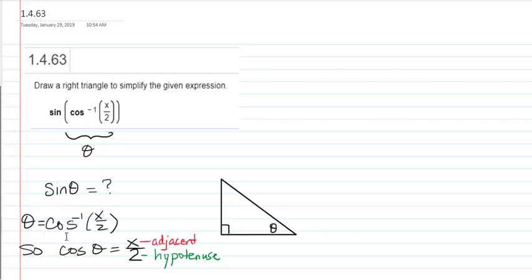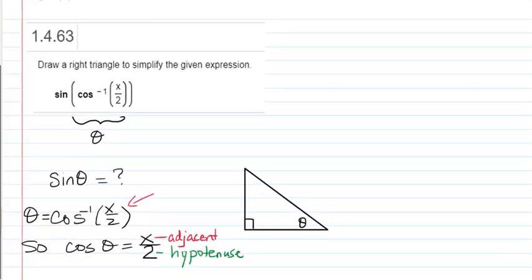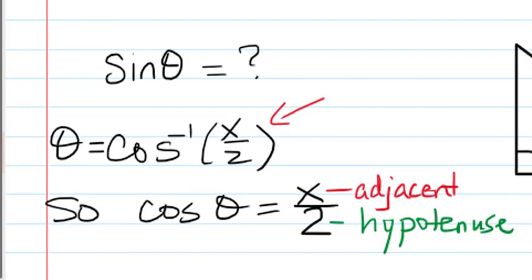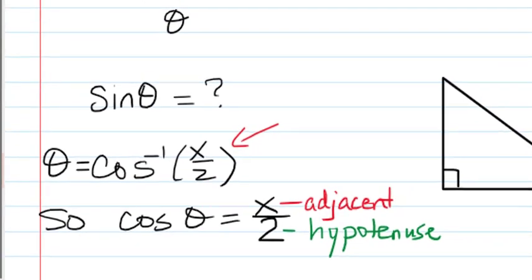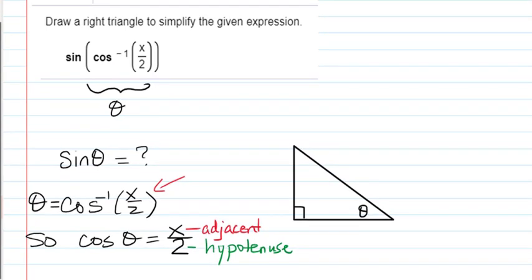Well, if theta is the inverse cosine of x over 2, then that means that cosine of theta is x over 2. These two statements are equivalent. And cosine of theta is adjacent over hypotenuse.